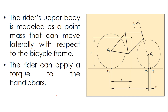The rider's upper body will be modeled as a point mass, very similar to what we were studying with the inverted pendulum, that can move laterally with respect to the bicycle frame. The rider can apply a torque to the handlebars — the rider can apply force not only on pedals to make the bicycle gain speed, but also will be applying torque on the handlebars to stabilize the position of the bicycle.